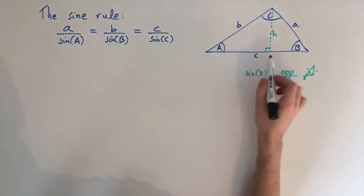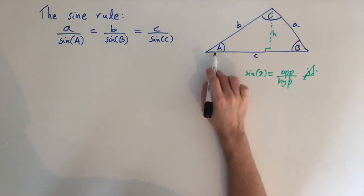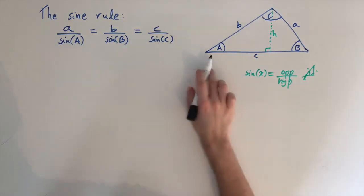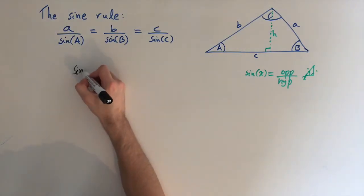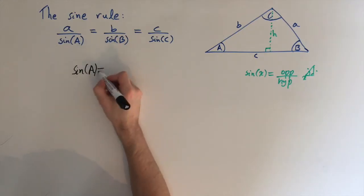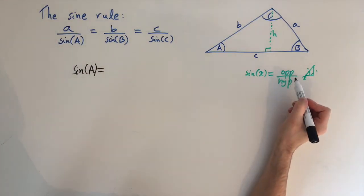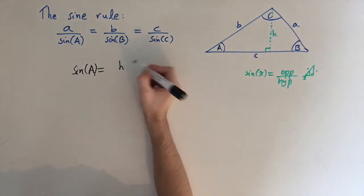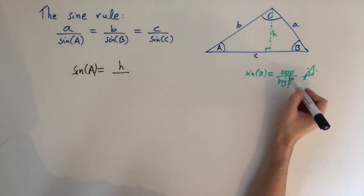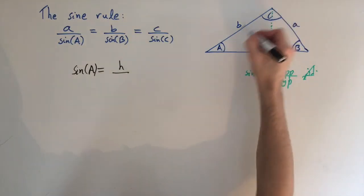So now we have a right angle triangle with this angle a, which means we can write what sine of a is using this definition. So sine of the angle a is the ratio of the opposite side divided by the hypotenuse. So here the opposite side is this one which has length h. So we have h divided by the length of the hypotenuse, and the hypotenuse is the longest side, so it's this one, it's b.